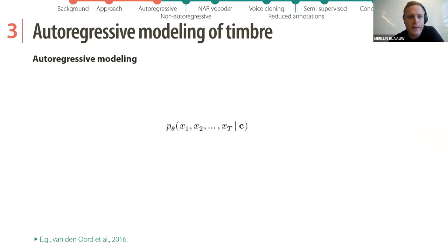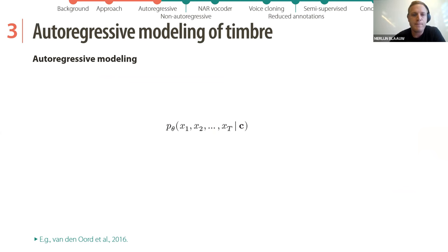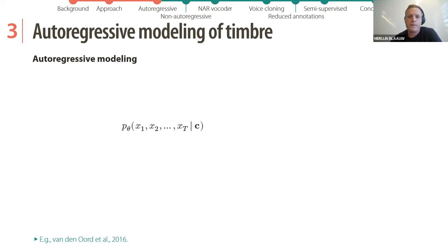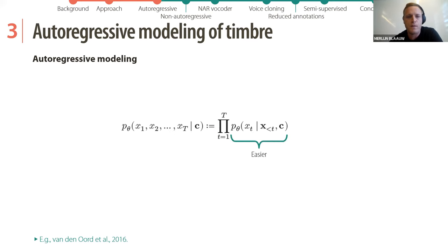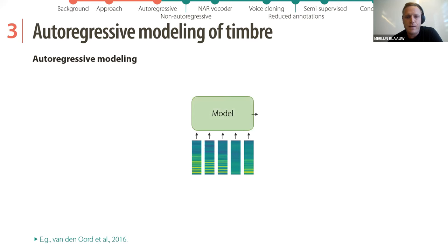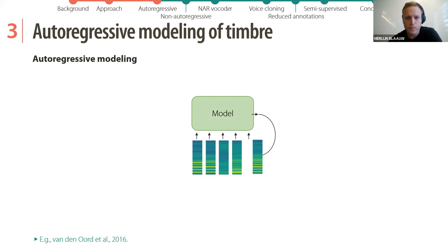Inspired by WaveNet, we first investigated autoregressive modeling. One of the key problems is modeling a joint distribution over many time steps, which is very difficult. What autoregressive models do is factorize this joint probability into a product of conditional probabilities, where each time step is conditioned on all previous time steps. At synthesis, we sample one time step and feed it back to the inputs to predict the next.